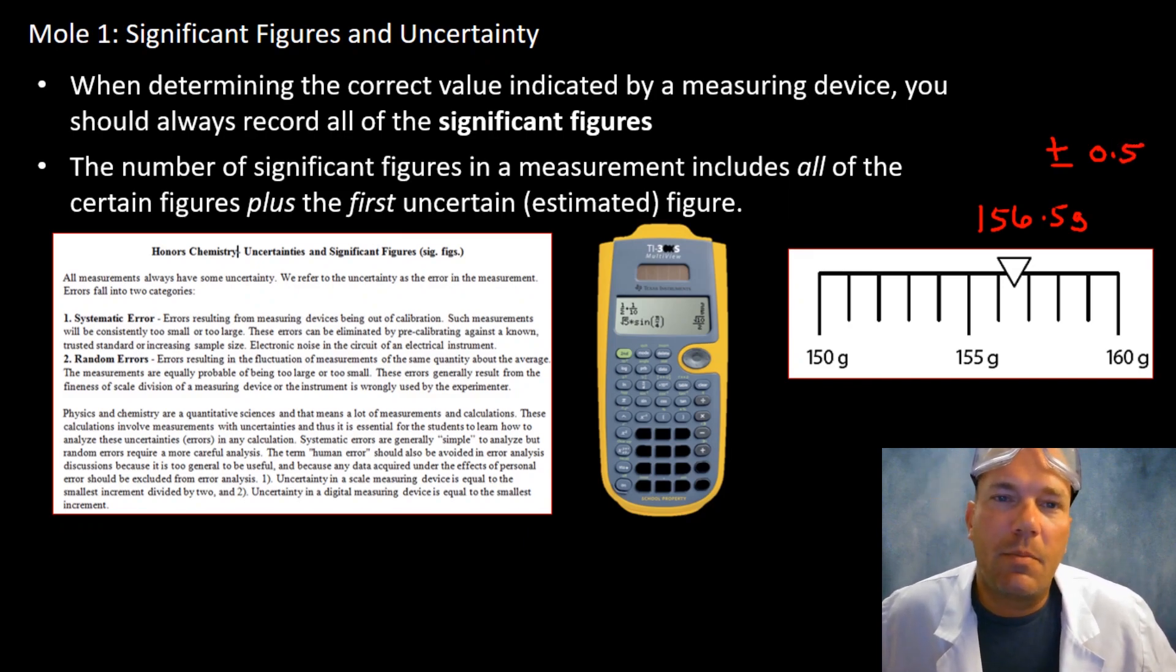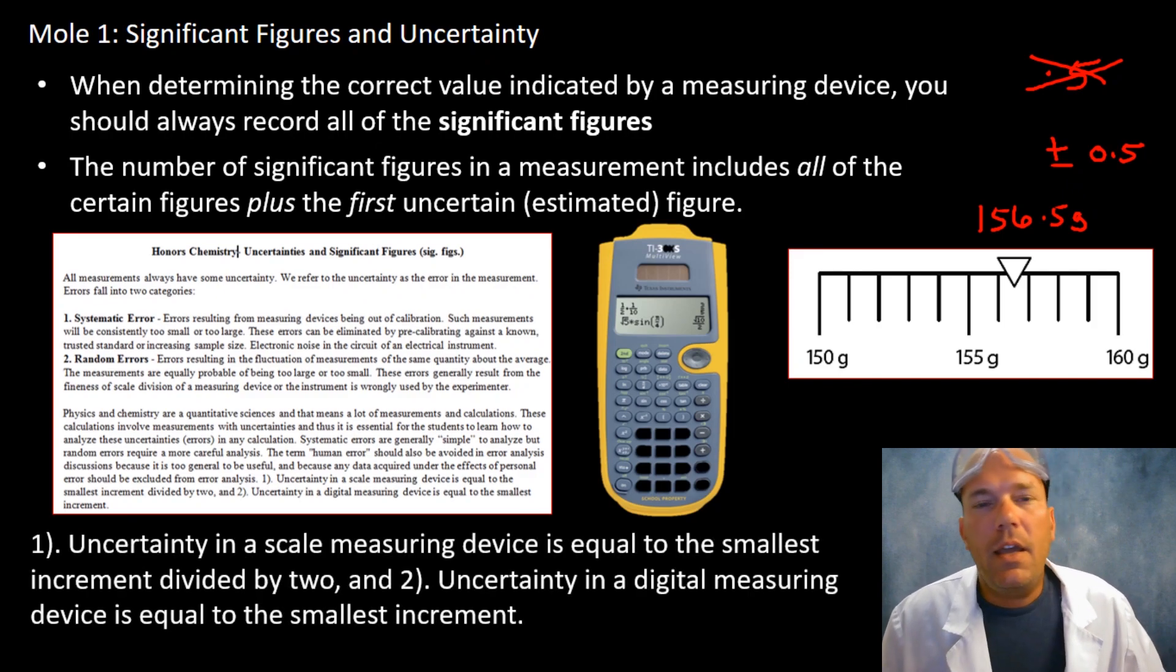Another point I would like to make: always include this zero. This comes from my research background but it's just good practice. That zero accentuates the fact that there is a decimal preceding that number. So please get into the habit of not doing something like this - put that zero in front please.